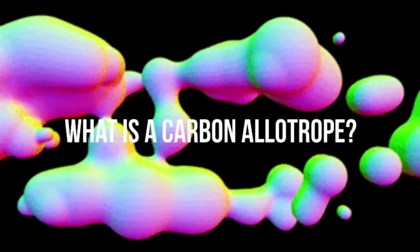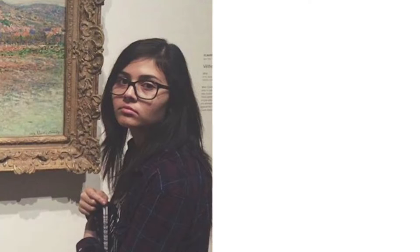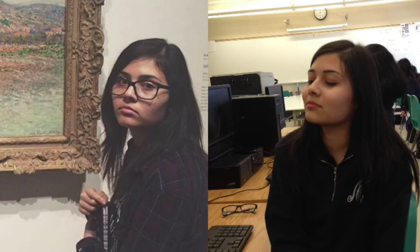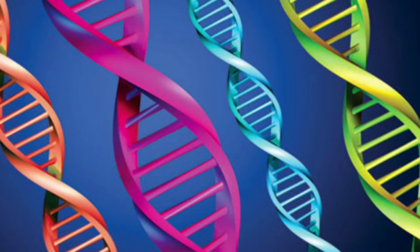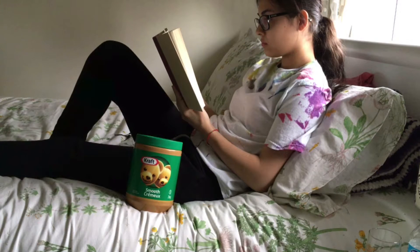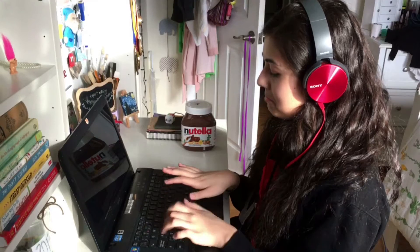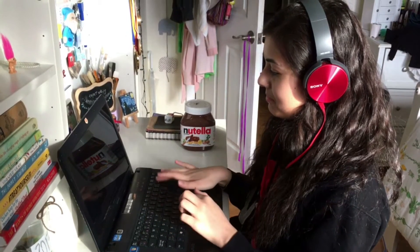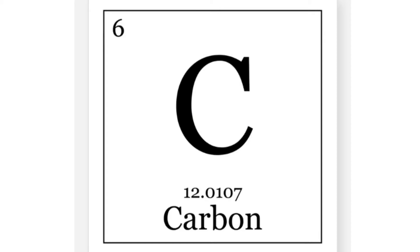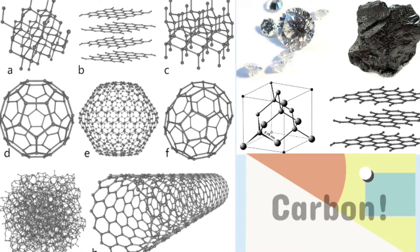You might be asking yourself right now, well what is an allotrope? Let's think about it this way. Imagine I have an identical twin. While our genetic makeup is the same, we have different hobbies and traits. For example, I enjoy reading, peanut butter, and wear glasses, whereas my twin likes listening to music, Nutella, and going on the computer. Similarly, elements such as carbon can be like this too — carbon can exist in many forms, all with different chemical structures and properties.